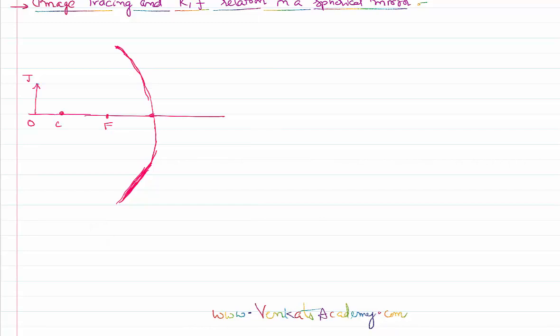The first rule is: if the light ray from the object strikes the curved surface parallel to the principal axis, it gets reflected and passes through the principal focus. That's rule number one. If the incident light ray is parallel to the principal axis, the reflected light ray passes through the principal focus itself.